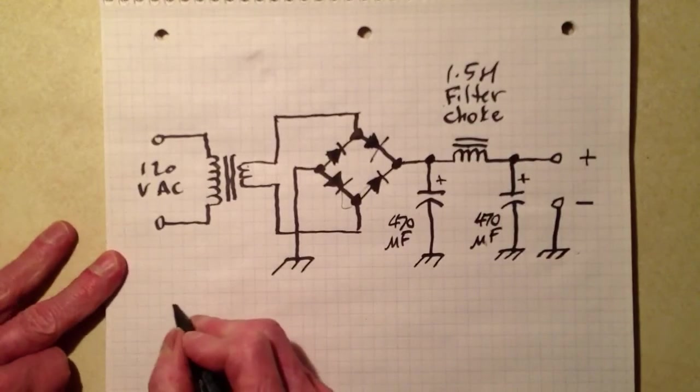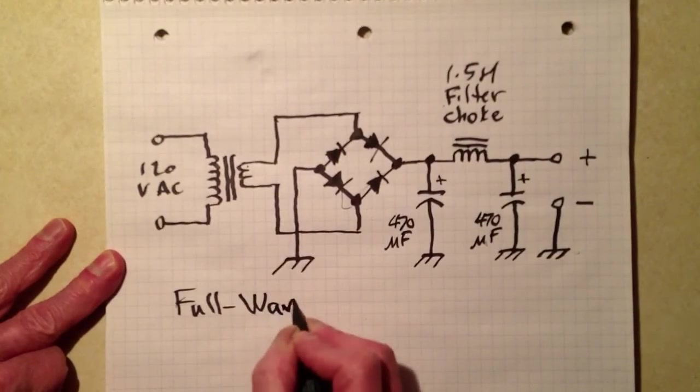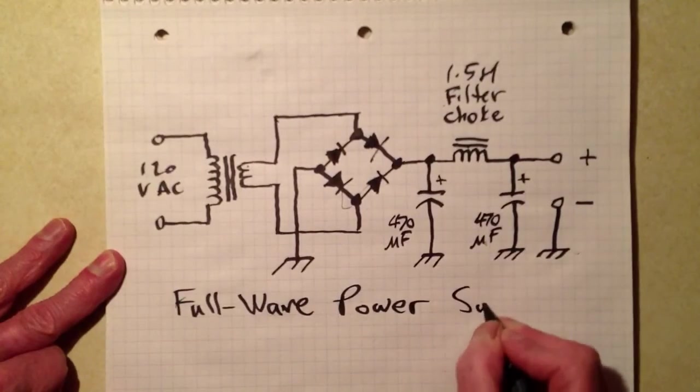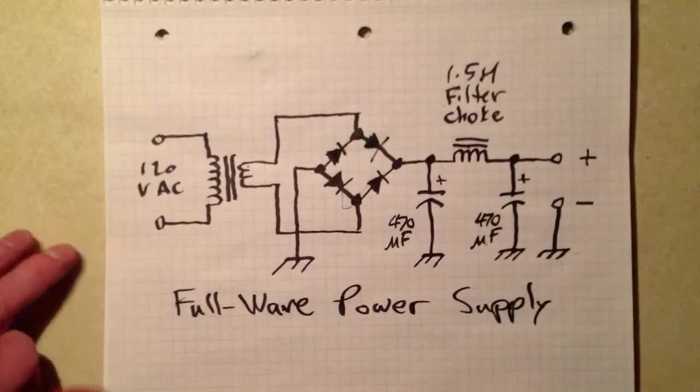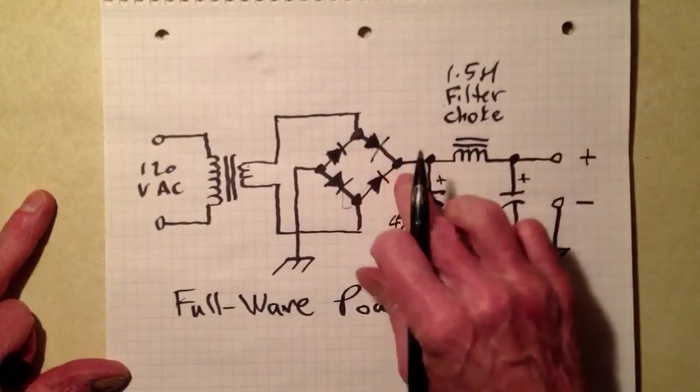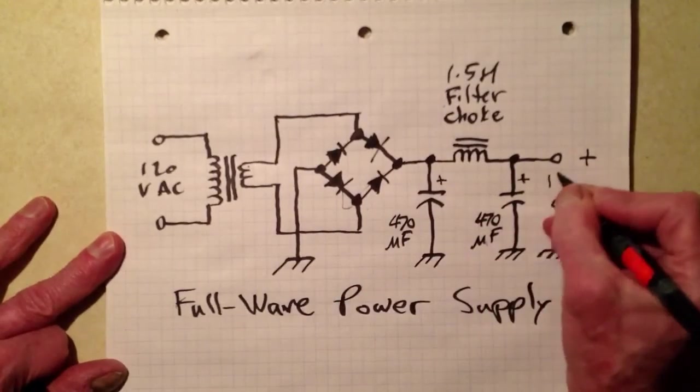So, what we have here is a full wave power supply. Now, these capacitors, in conjunction with this filter choke, get rid of the ripple. The pulsating direct current becomes pure direct current.